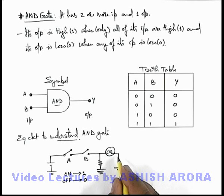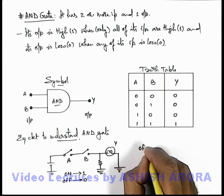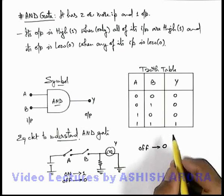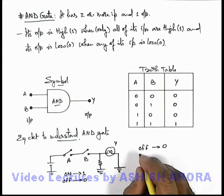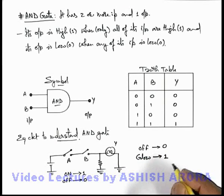And the bulb which is considered as the output Y, here we can write if the bulb is off, this denotes the zero state of output terminal, and if the bulb will glow, this will give us the state 1 of the output terminal.